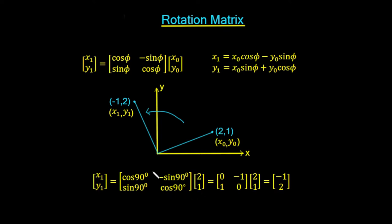This matrix is the same as the simplified form because cos(90) is 0 and sin(90) is 1, so the top-right entry is negative 1. We multiply this out: 0 times 2 is 0, and minus 1 times 1 gives us minus 1 for the x-coordinate. Then 1 times 2 gives us 2 for the y-coordinate. So that gives us the point (−1, 2).